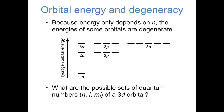Let's make sure we're all on the same page. What are the possible sets of quantum numbers n, l, and m_l for a 3d orbital? By definition, a 3d orbital has n=3 and l=2. Recalling the restrictions on m_l in the spherical harmonic functions, m_l can only range from −l to +l, so m_l must be −2, −1, 0, 1, or 2.